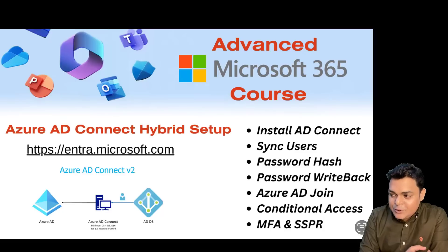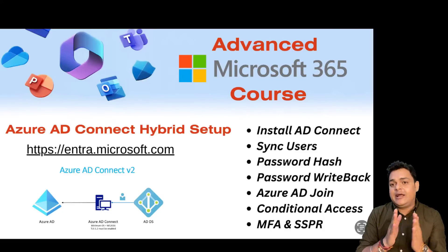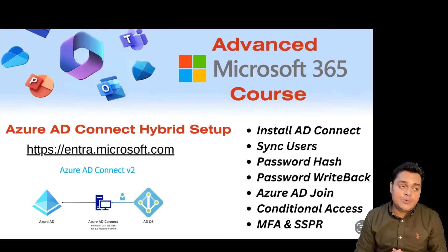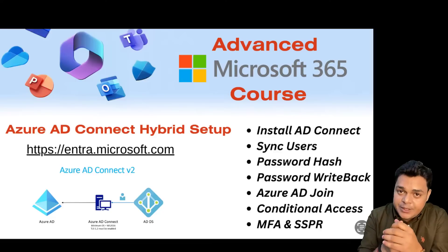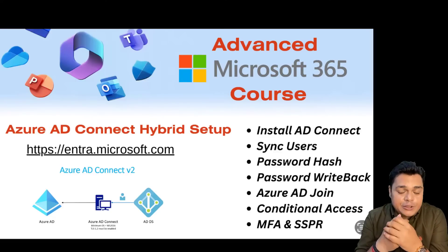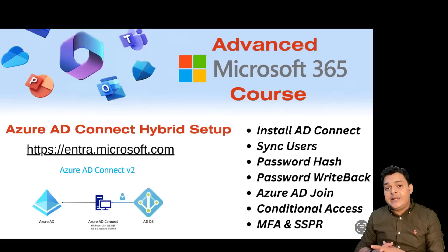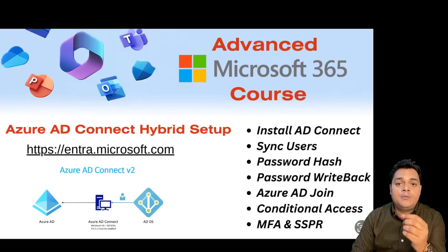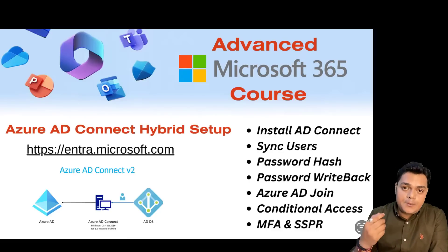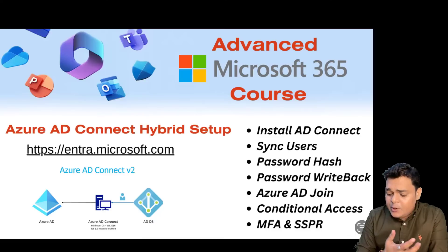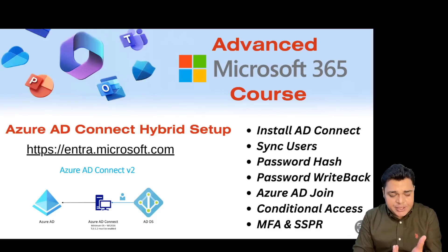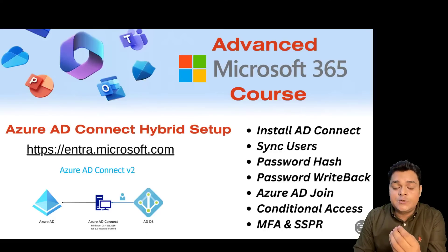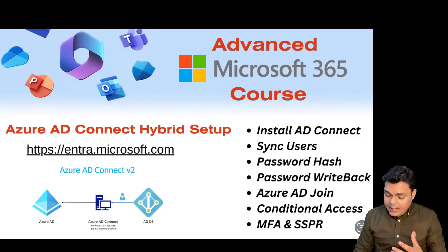Next, once we complete Entra Admin Center, we'll cover Azure AD Connect and hybrid setup. Azure AD is a separate part — Azure AD Connect helps you manage your hybrid environment. For example, if you've established an on-premises domain controller on Server 2016, 2019, or 2022, and want to synchronize users to Azure AD, Azure AD Connect helps you do that. Services available include Password Hash Synchronization, Password Writeback, Pass-Through Authentication, SSO (Single Sign-On), and ADFS Federation Services.